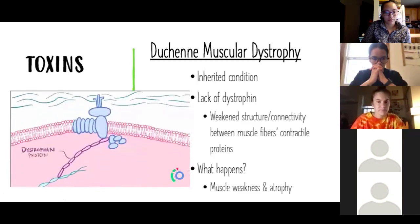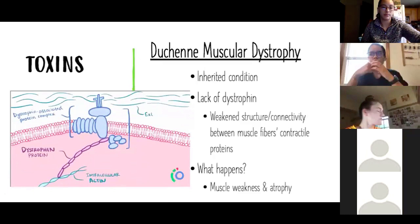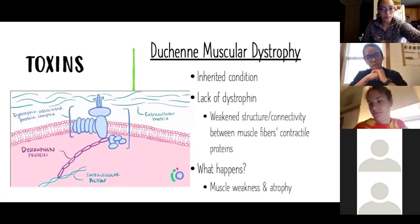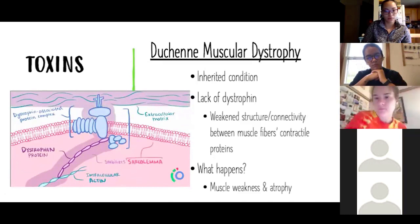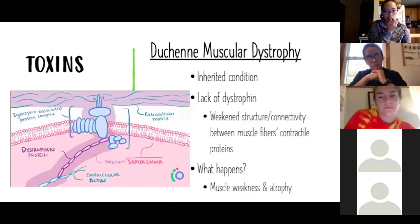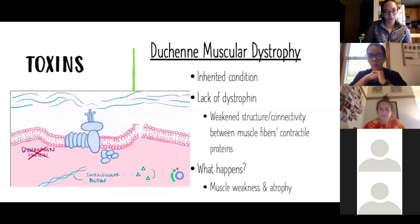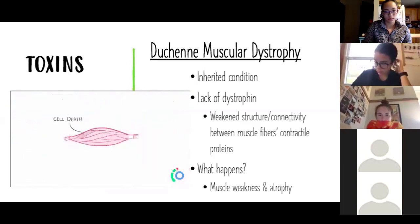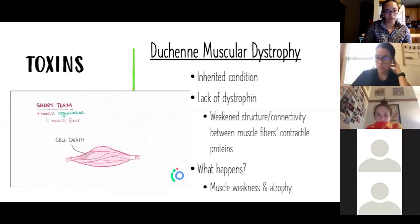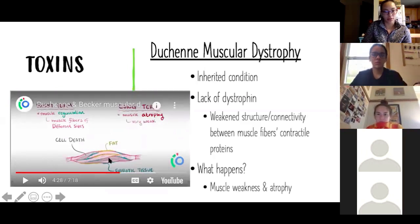Dystrophin links intracellular actin with the dystrophin-associated protein complex, anchored to the extracellular matrix around the muscle cell. Without dystrophin, the sarcolemma essentially wilts and becomes unstable over time. Cellular proteins like creatine kinase (CK) escape the damaged cell, and calcium starts entering the cell, ultimately leading to cell death. In the short term there's muscle regeneration, but in the long term the muscles atrophy and are infiltrated by fat and fibrotic tissue, leaving them very weak.